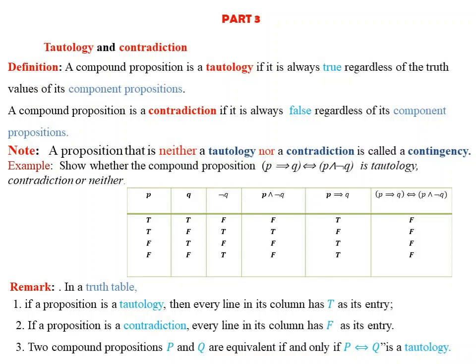Let us start from tautology and contradictions. If a proposition is true regardless of the values of its component propositions — whether those component propositions are true or false — it is a tautology. A proposition that is neither a tautology nor a contradiction is called a contingency.